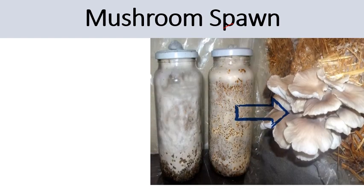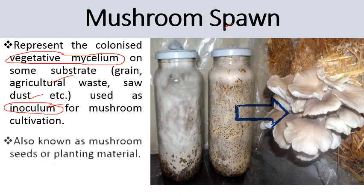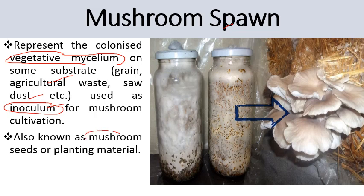Let's start. Firstly, what is mushroom spawn? Basically, spawn is the mushroom seed, or the material which you use to produce mushrooms. It represents the colonized vegetative mycelium. We use vegetative mycelium on some substrates like grain, agriculture waste, sawdust, etc. It is used as inoculum for mushroom cultivation, and these are also known as mushroom seeds or planting material used for the cultivation of mushroom.